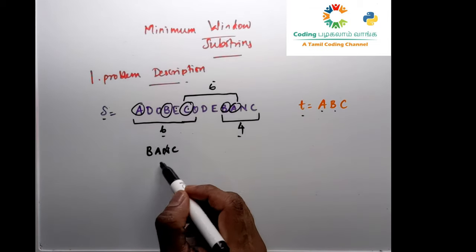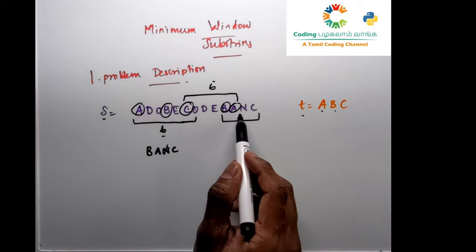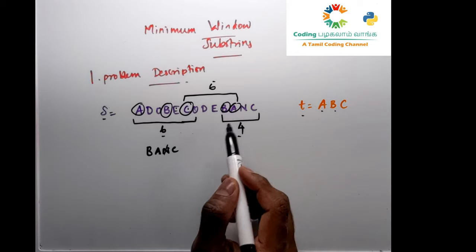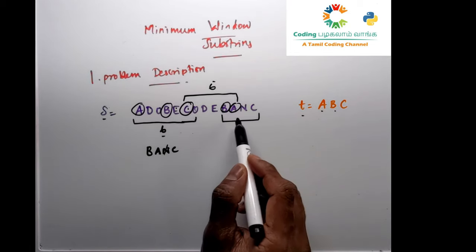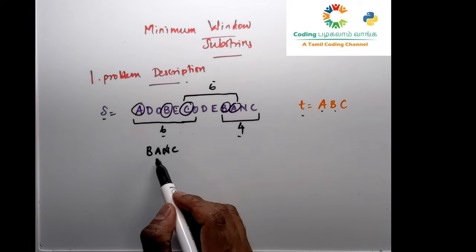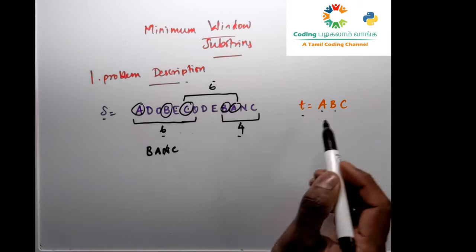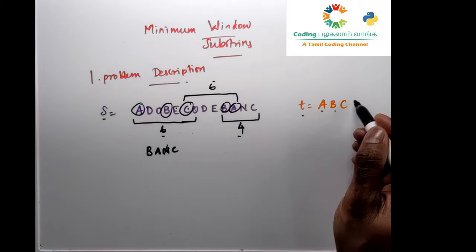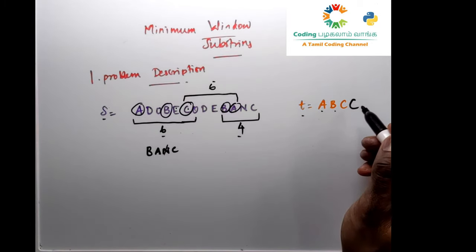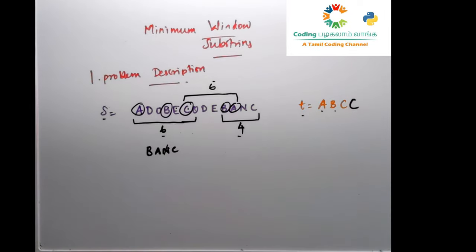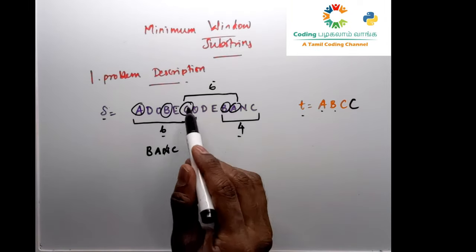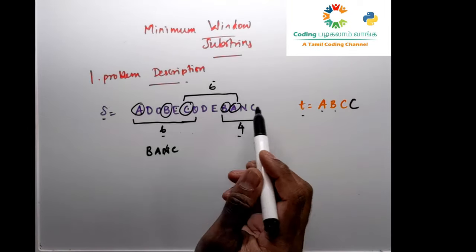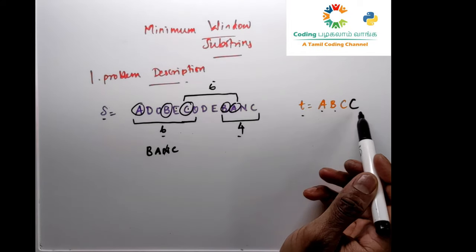We need to include the characters in the output. Now, what if string T has an extra character — say two C's? Then we need to look for a window in string S that has all those characters including both C's.